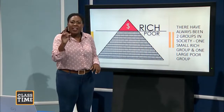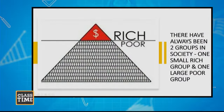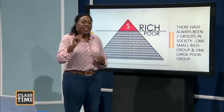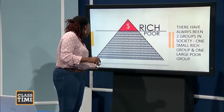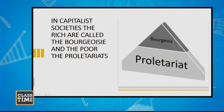Marx asserts that throughout history there have always been two groups: one small rich group and one large poor group. From the beginning of time, since we passed hunting and gathering bands, there have always been these two groups in every single society. In the capitalist society, which is the society we live in now, the rich are called the bourgeoisie — it's French, spelled bourgeoisie but pronounced bourgeois.